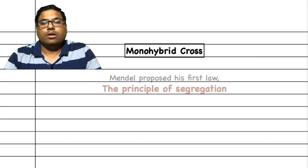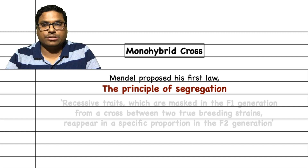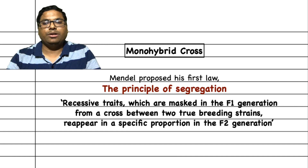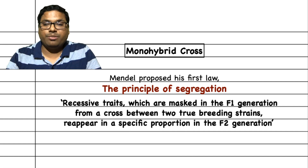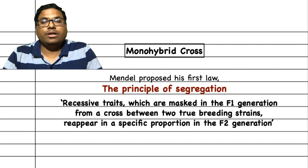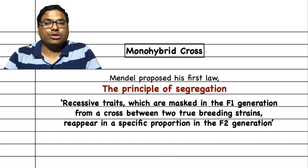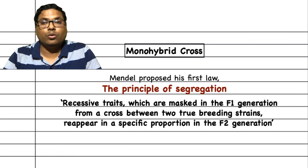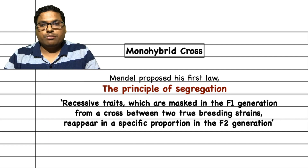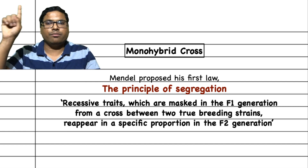Let us see the significance of the monohybrid cross. The very important ratios are: phenotypic ratio 3:1 (three tall to one dwarf) and genotypic ratio 1:2:1. With the data from the monohybrid cross, Mendel proposed his first law — the principle of segregation — which states that recessive traits masked in F1 generation from a cross between two true-breeding strains reappear in a specific proportion in F2 generation. The recessive trait small t was masked by dominant T in F1, but reappeared in F2 when small t combined with small t, giving one dwarf plant out of four.